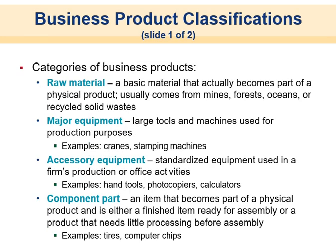Switching to business product classifications — there are several types. Raw material is a basic material that becomes part of a physical product, like something mined from the ground, harvested from a forest or ocean, or recycled plastic. Major equipment refers to large capital tools and machines used for production, like a crane or stamping machines that take raw iron and turn it into something usable. Accessory equipment includes standard items used in production or office activities, like hand tools, photocopiers, and calculators.